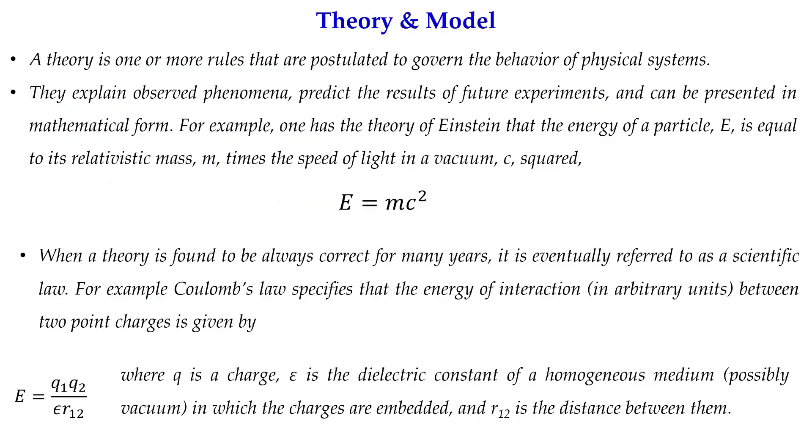First is theory and model. What does the theory mean and what does the model mean? A theory is one or more rules that are postulated to govern the behavior of physical systems. It actually can explain the observed phenomena, it can predict the results of future experiments and the theory can be presented in some mathematical form. Like Newton Einstein's relativity theorem, e = mc^2, where e is energy, m is mass of the particle, c is the velocity of light. From here you can get the value of energy if you know the value of other two variables. When a theory is found to be always correct for many years with no exceptions, then we can make it a law or scientific law. For example, Coulomb's law specifies the energy of interactions between two point charges and it can be represented as e = q1*q2 / (epsilon*r12).